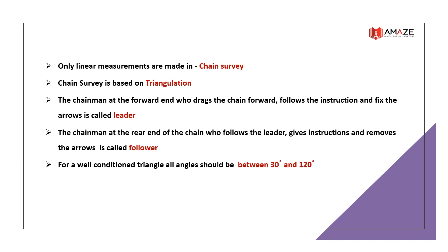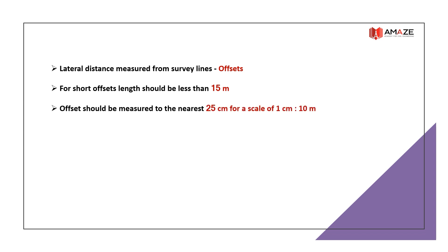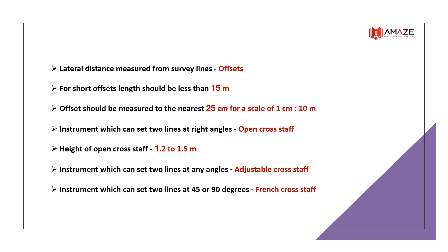For a well-conditioned triangle, all angles should be between 30° and 120°; for the best-conditioned triangle, all angles are 60°. Lateral distance measured from survey lines is called offsets. Short offsets have a length of less than 15 m; long offsets greater than 15 m. Offsets should be measured to the nearest 25 cm for a scale of 1 cm to 10 m. An instrument that sets two lines at right angles is an open cross staff (height 1.2–1.5 m). For two lines at any angle, an adjustable cross staff is used; for 45° or 90°, a French cross staff is used.